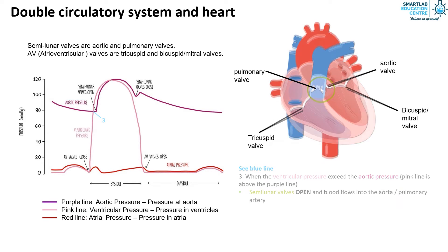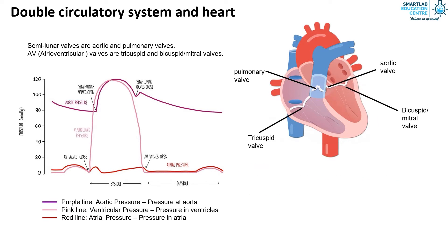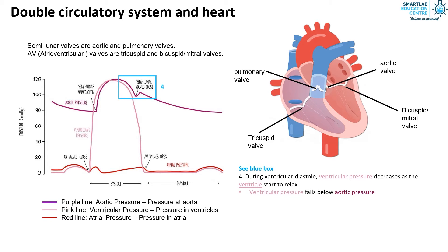In the fourth stage, ventricular diastole occurs whereby the ventricular pressure decreases as the ventricles start to relax. The ventricular pressure falls below the aortic pressure, causing the semilunar valves to close to prevent backflow of blood. The second heart sound, 'dub', is created.